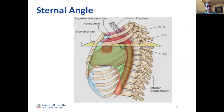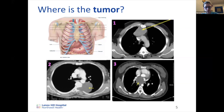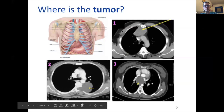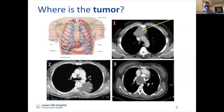Now a quick question: orient yourself on this CT scan — what's anterior, what's posterior? The yellow arrow points to a tumor. For scan number one, tell me which mediastinum the tumor is in. To answer, determine if the scan is above the heart, at the level of the heart, or below. The answer is superior mediastinum — you can see the aortic arch here, telling you this scan is above the level of the heart.